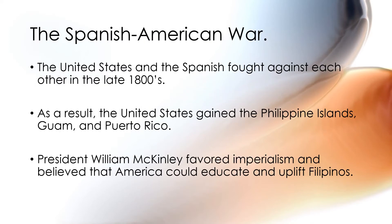The United States and the Spanish fought against each other in the late 1800s. As a result of the war, the United States won and gained the Philippine Islands, Guam, and Puerto Rico. President William McKinley favored imperialism at the time and believed that Americans could educate and uplift Filipinos in the Philippine Islands.